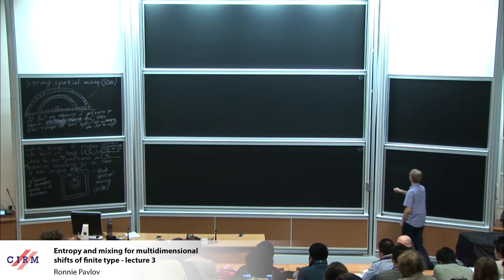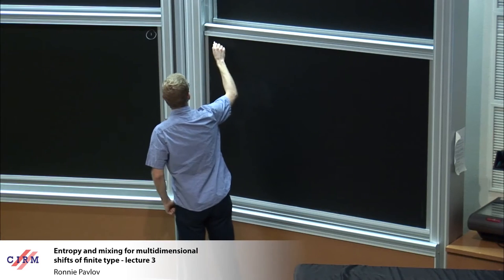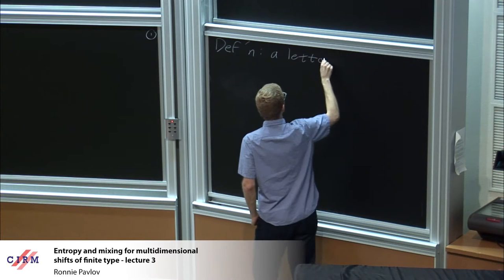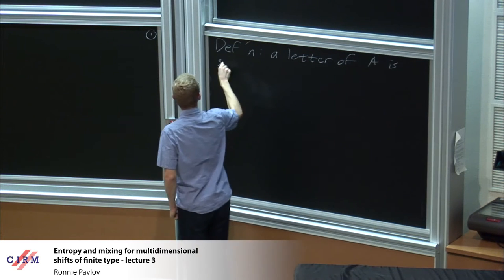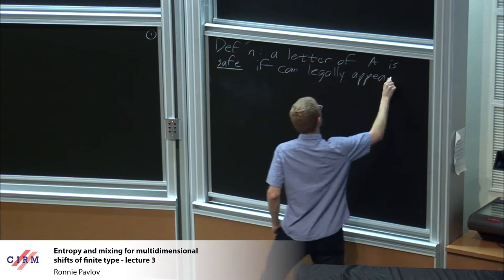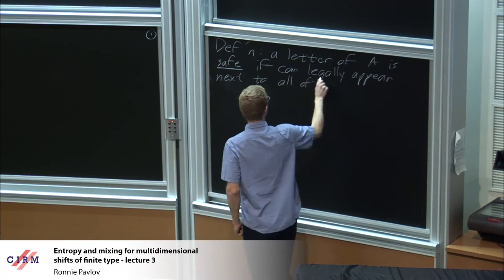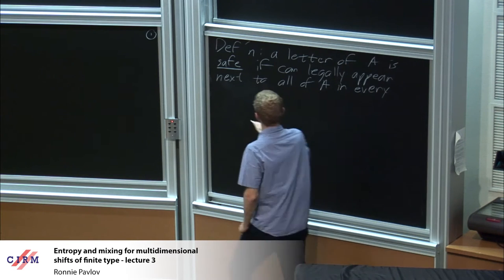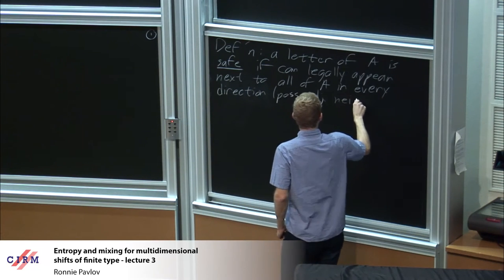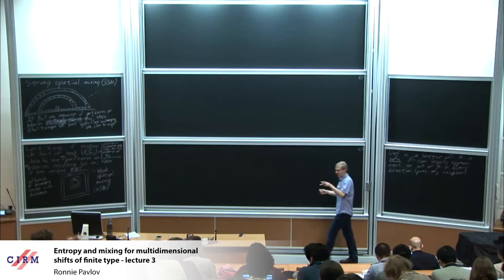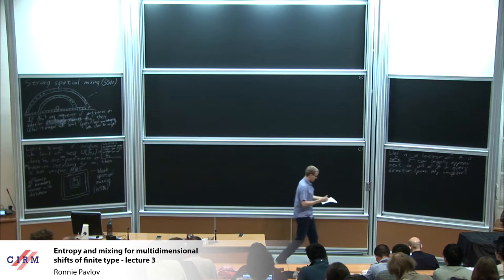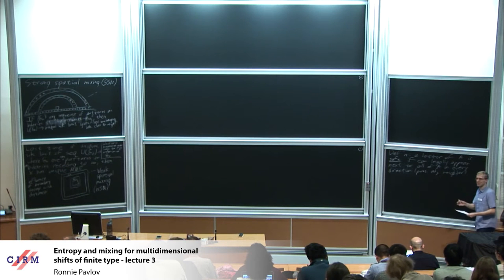Here are just a couple of theorems — I don't claim them to be the strongest possible. For one of them I need a definition, but it's a very easy definition. A letter of A is safe if it can legally appear next to all of A in every direction, meaning every possible adjacent neighbor. So remember all the examples we're doing are defined by nearest-neighbor pair restrictions. A safe symbol is one where there's absolutely no restriction that involves it. Anybody happen to remember a safe symbol from any of the examples we've talked about?